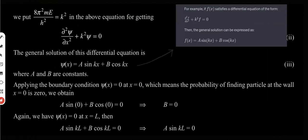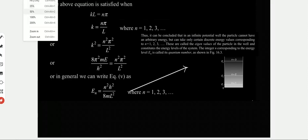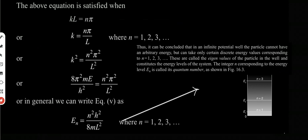At x equal to L (the right wall), psi(L) equals A sin(KL) plus B cos(KL) equals 0. Since B is already 0, this reduces to A sin(KL) equal to 0, which means sin(KL) equal to 0. This equation is satisfied when KL equals nπ, so K equals nπ/L, where n equals 1, 2, 3.